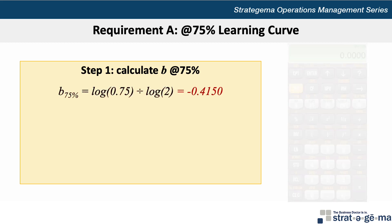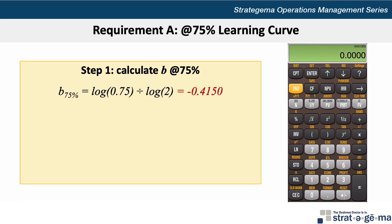Here's the calculation demonstrated using a Texas Instruments BA2 Plus financial calculator, where we enter 0.75 and then press the LN button for logarithm, then divide, press the number 2, then LN, and then the equal sign to get a result of negative 0.4150. I'll store this answer into the calculator memory block number one by pressing STO, then 1.